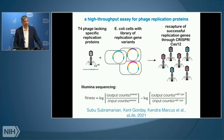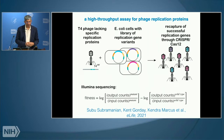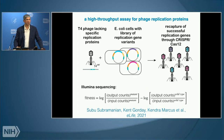T4 uses these proteins instead of the E. coli proteins. Additionally, the T4 replication proteins are more similar to eukaryotic replication proteins — they're actually a much better model for eukaryotic replication than is the bacterial system.